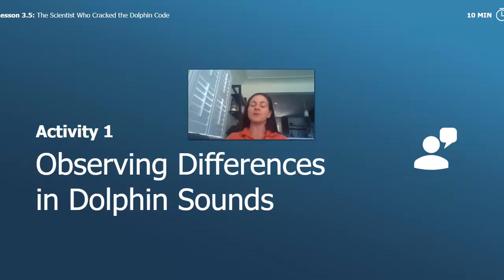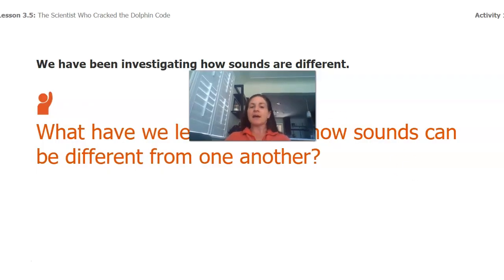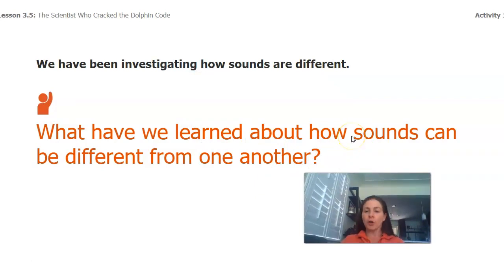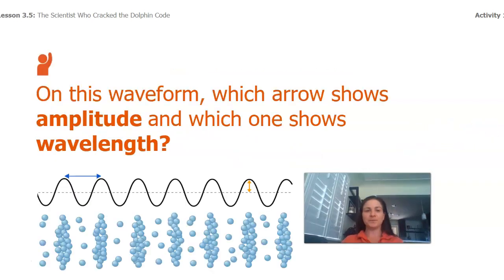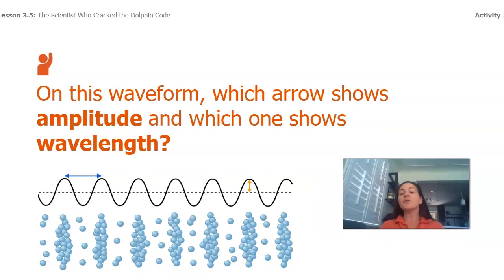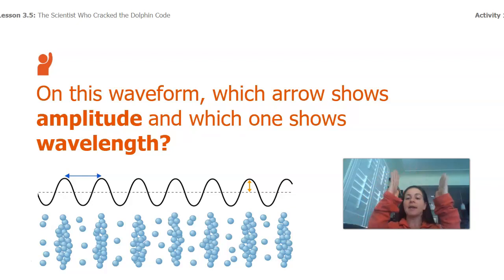The first thing that we're going to do is observing differences in dolphin sounds. We've been investigating how sounds are different, and we've learned that sounds can be different from one another in a couple main ways. The biggest ways are that waves have different amplitudes and waves have different wavelengths, which gives them different volumes and different pitches.